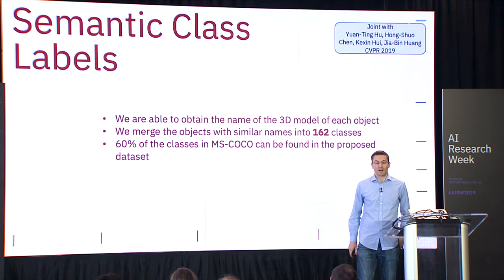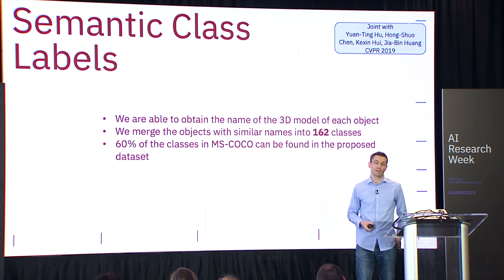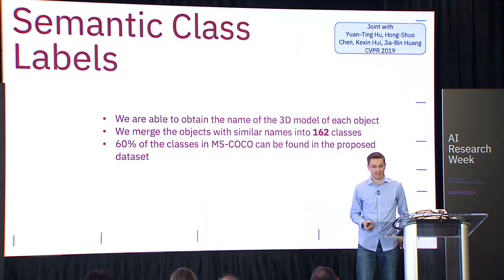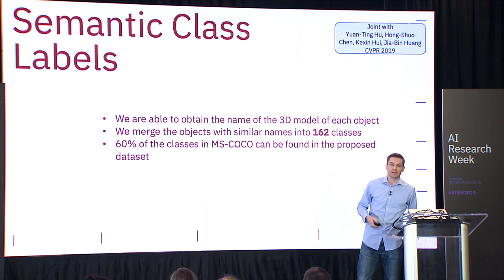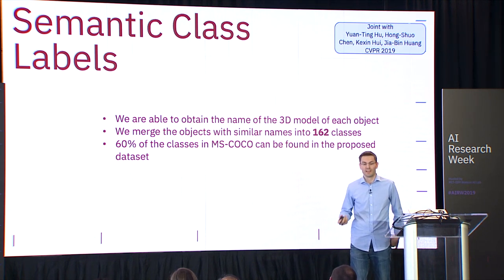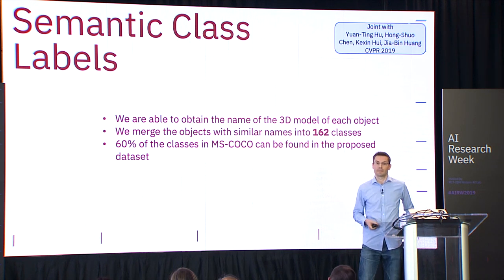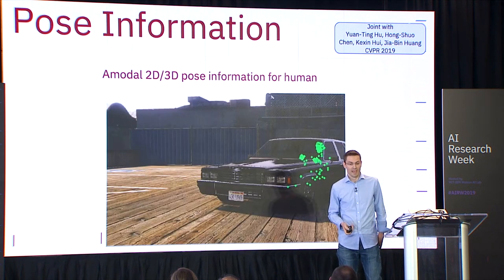We can also get class label information by looking at the names of the models rendered, allowing us to collect 162 classes — 60% of which overlap with the classical COCO dataset used in computer vision. That allows us to test models trained on this dataset on real-world data. Comparing to existing datasets, ours is the first video dataset that allows taking advantage of temporal information, with 1.8 million labeled instances — compared to around 100,000 for other datasets — generated simply by running the game.